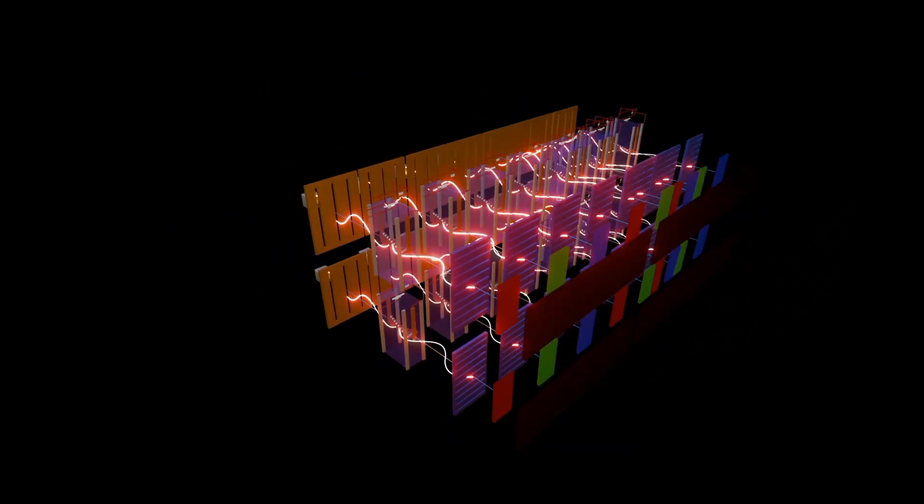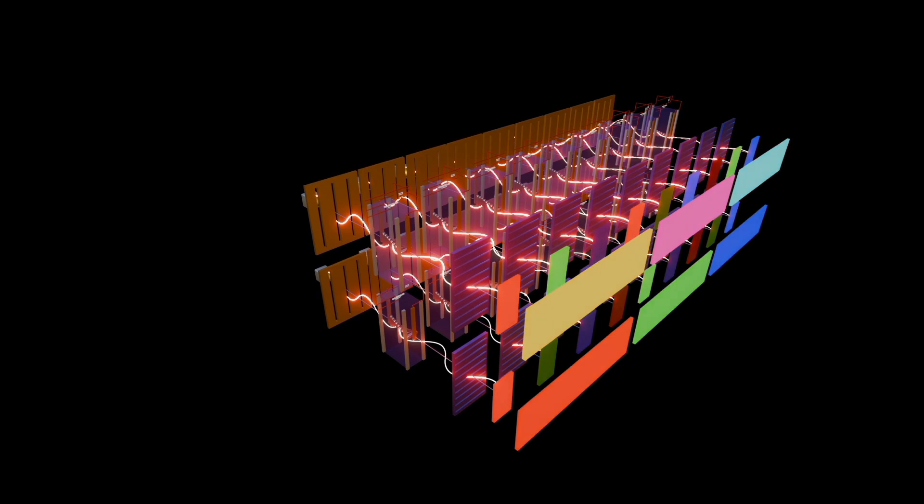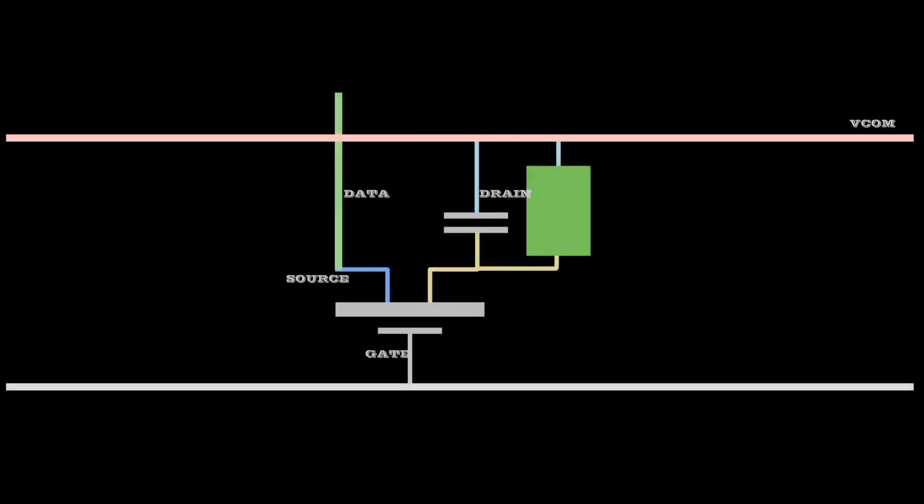The thin film transistor TFT LCD has source, gate and drain. It also has capacitor for storage of data.